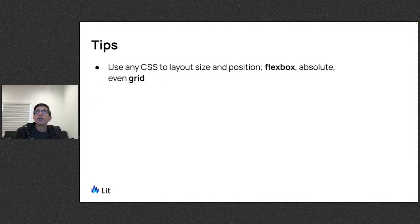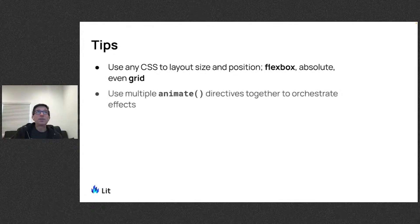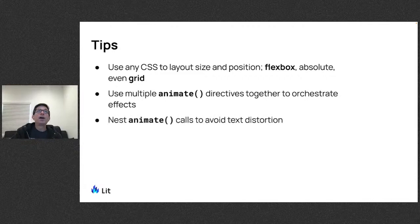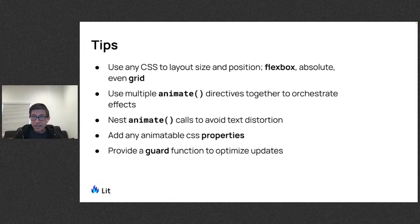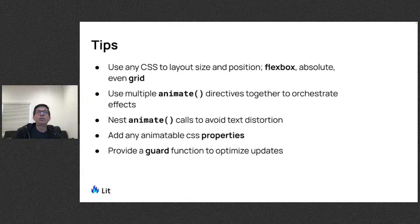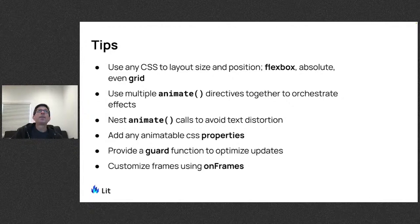Some tips for using the animate directive: you can animate however you want — flexbox, absolute positioning, CSS grid, whatever. You can use multiple calls to animate together to produce cool effects. You can use nesting to avoid text distortion. You can add other animatable CSS properties to the FLIP technique and let CSS handle the performance. There's a guard function, like the one in task, to only run measurements when certain data changes. And there are callbacks to customize frames for fancy effects.